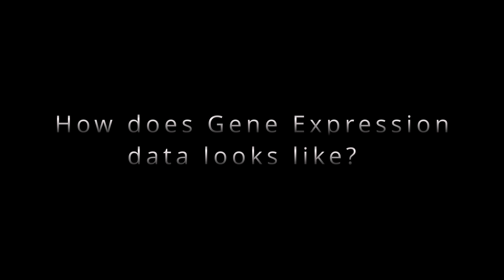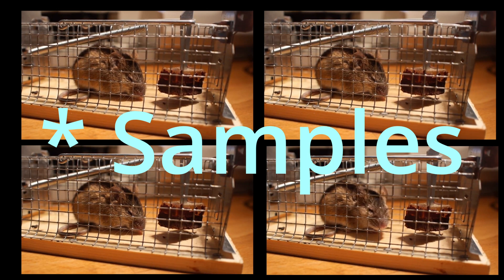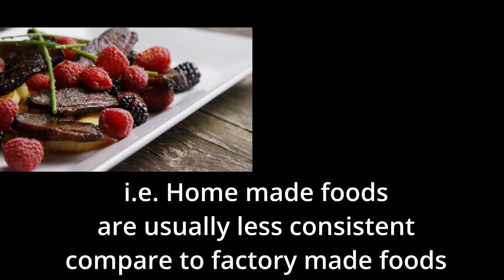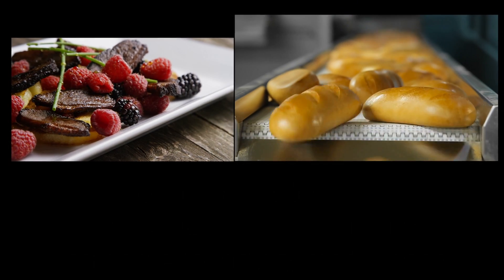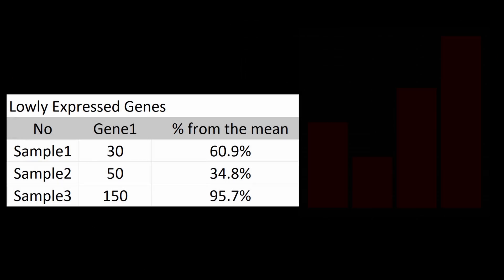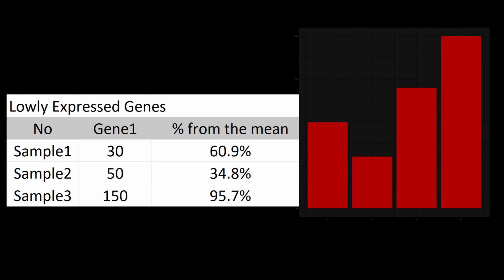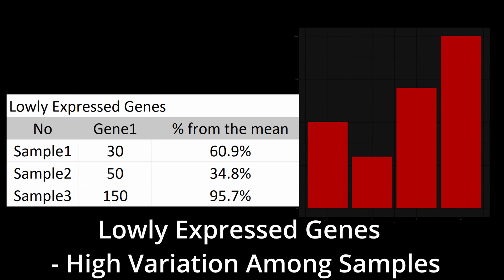How does gene expression data look like? Gene expression among genes is not normally distributed. That is, lower expressed genes are likely to have larger variation between samples. For example, a gene that has been only mapped 50 times, it is likely that from sample to sample the number is going to vary from 30 to 50 to 150.